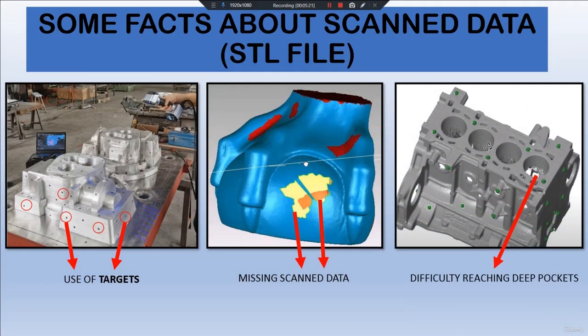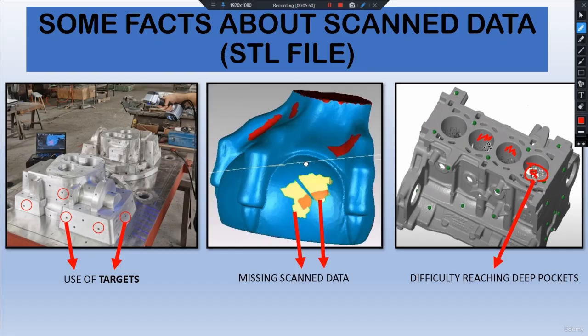Number three is difficulty in reaching deep pockets. If a component is very large and has deep pockets, it is possible the scanner cannot reach that area. As shown here, some scan data may be missing. It is not always a big problem, but if there are features in those areas we need, we must scan them properly using more angle shots.